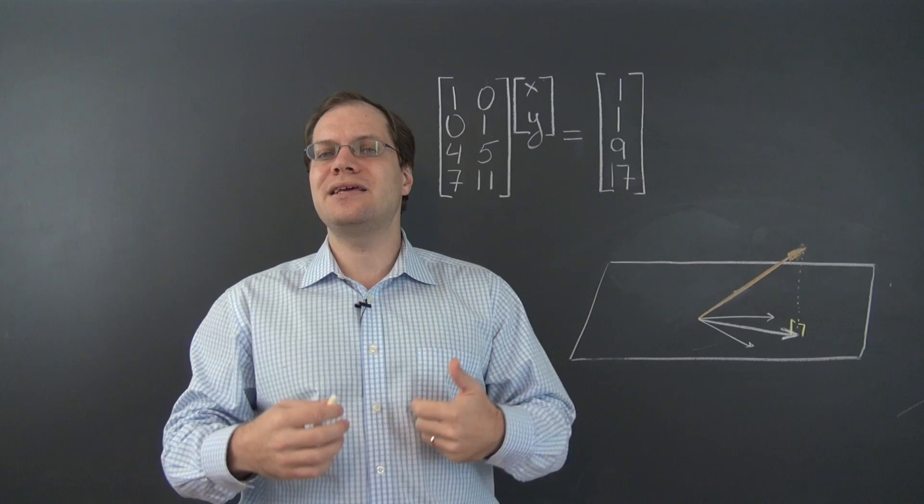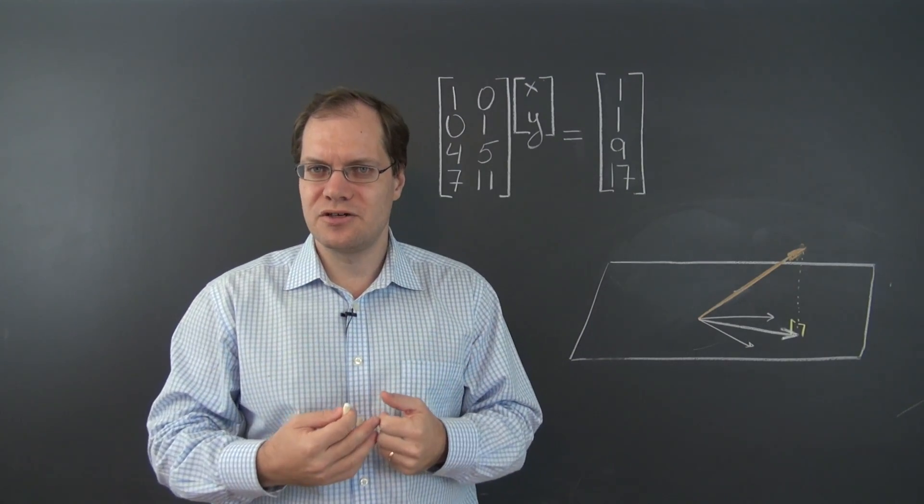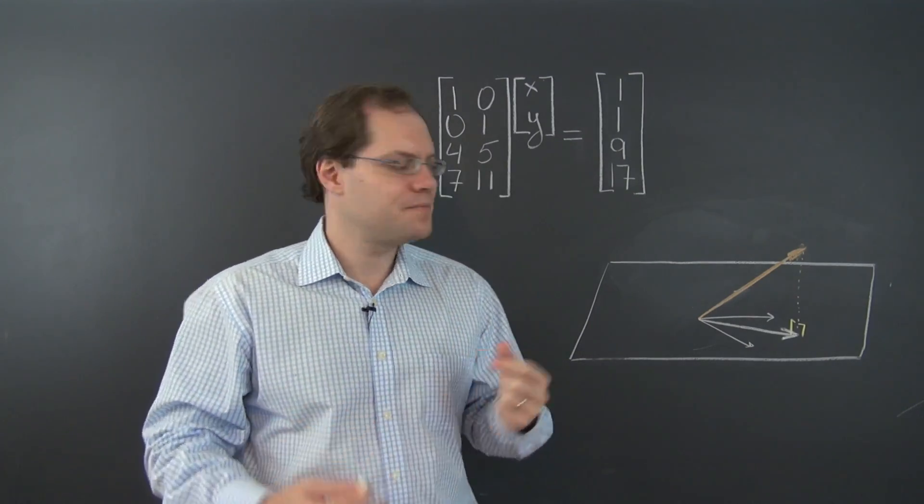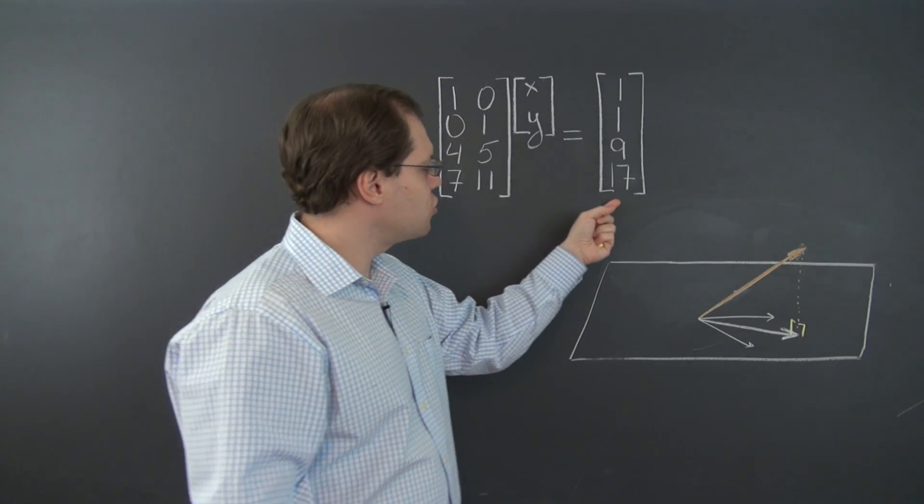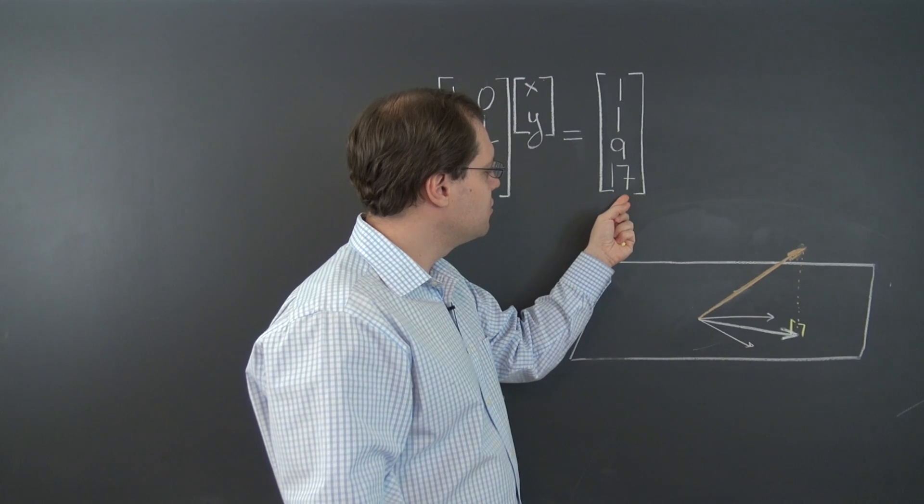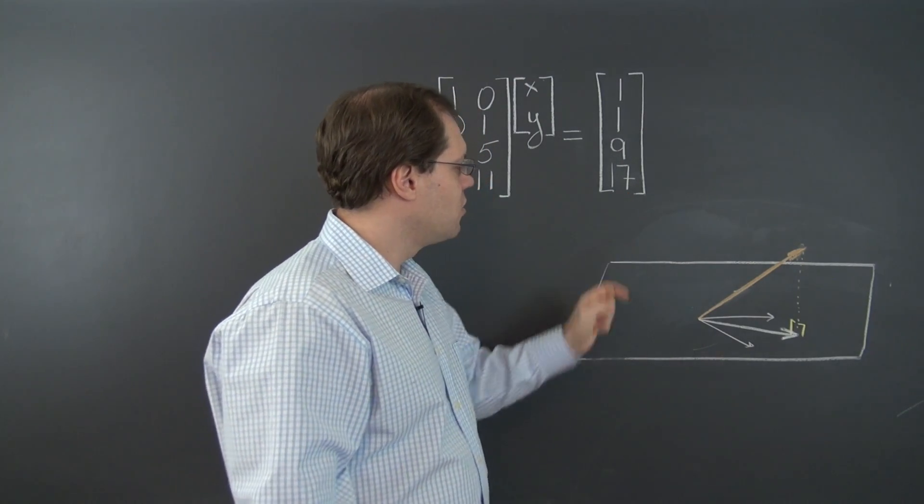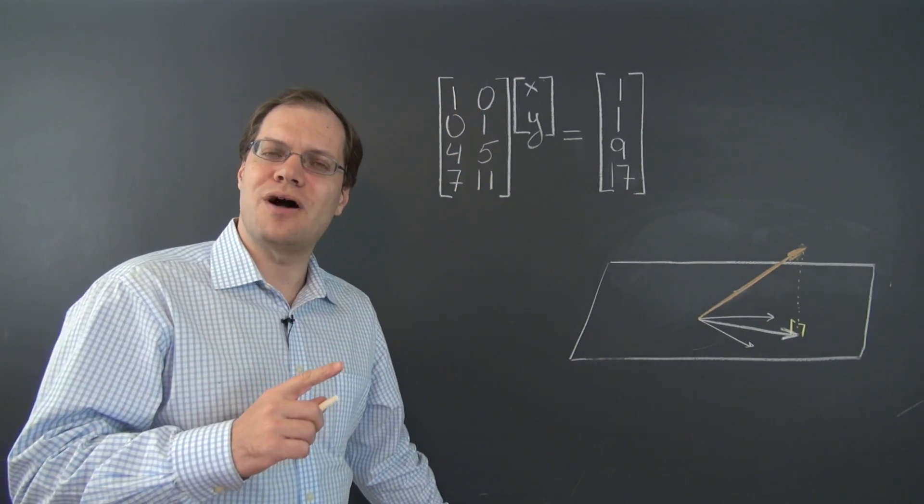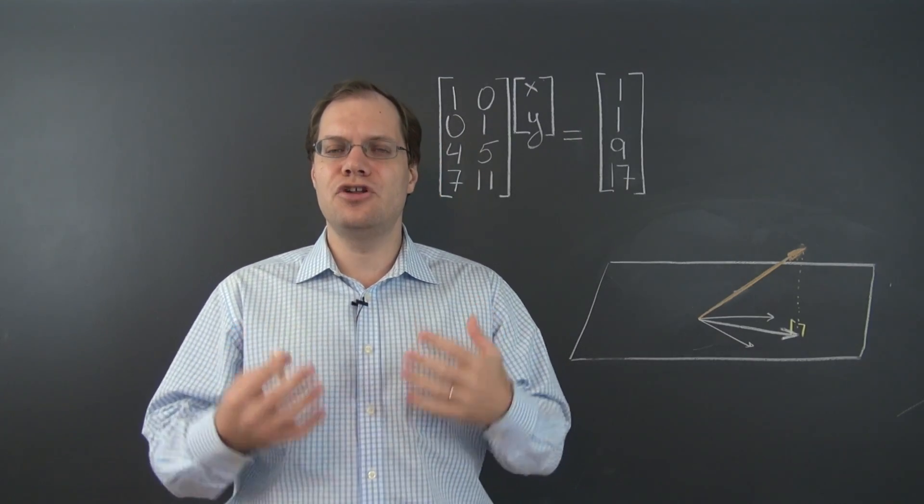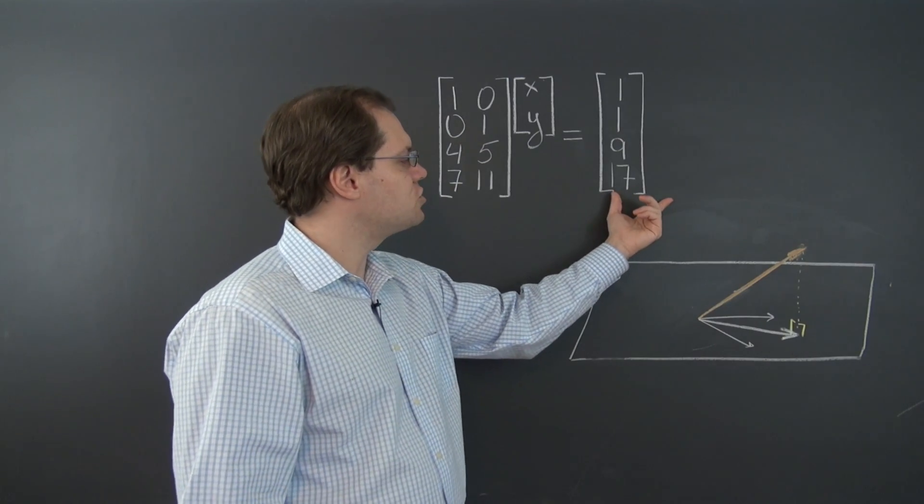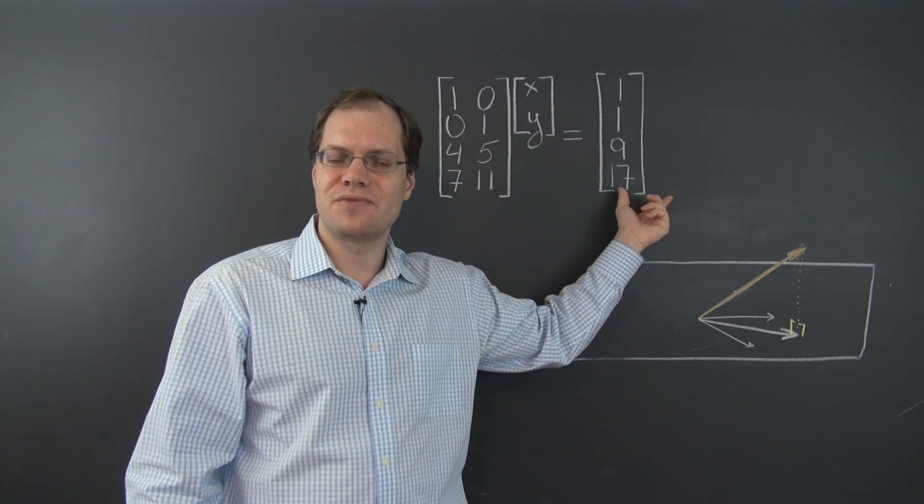So look for a vector within the span of these two columns that's as close as possible to this vector. But that's where the problem is. That's a problem because we don't have a notion for being close, two vectors being close in R^n.